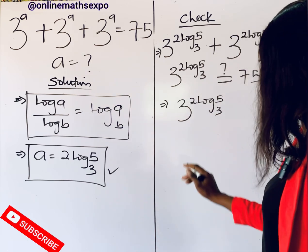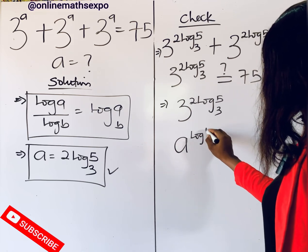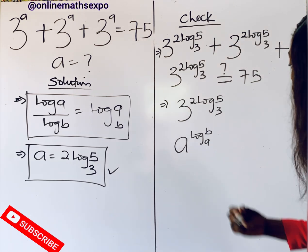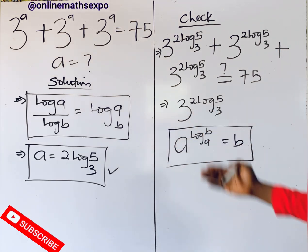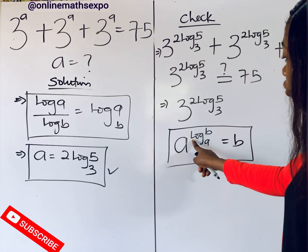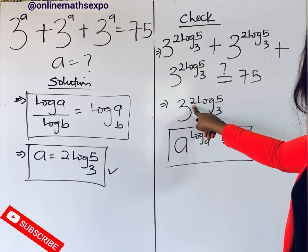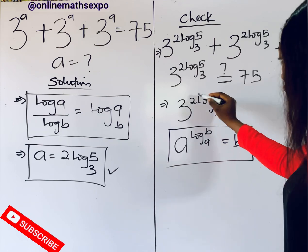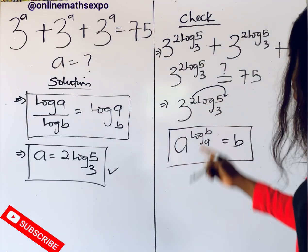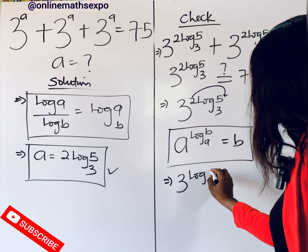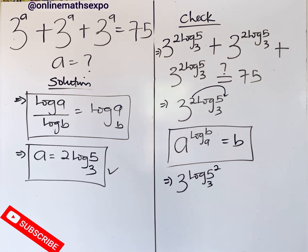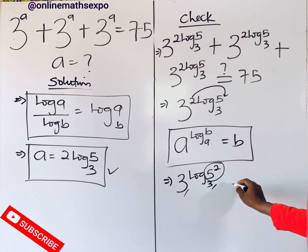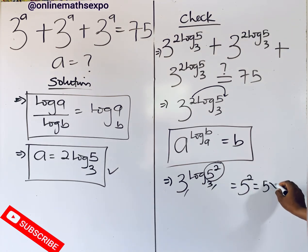Remember that for a^(log_a(b)), when the base of the log and the general base are the same, it is always equal to b. To apply this rule here, the coefficient of the log must be 1, but here it is 2. So we return the 2 to be the power of the number: 3^(log₃(5²)). Now the bases match, so this becomes 5² which gives us 5 times 5, which is 25.